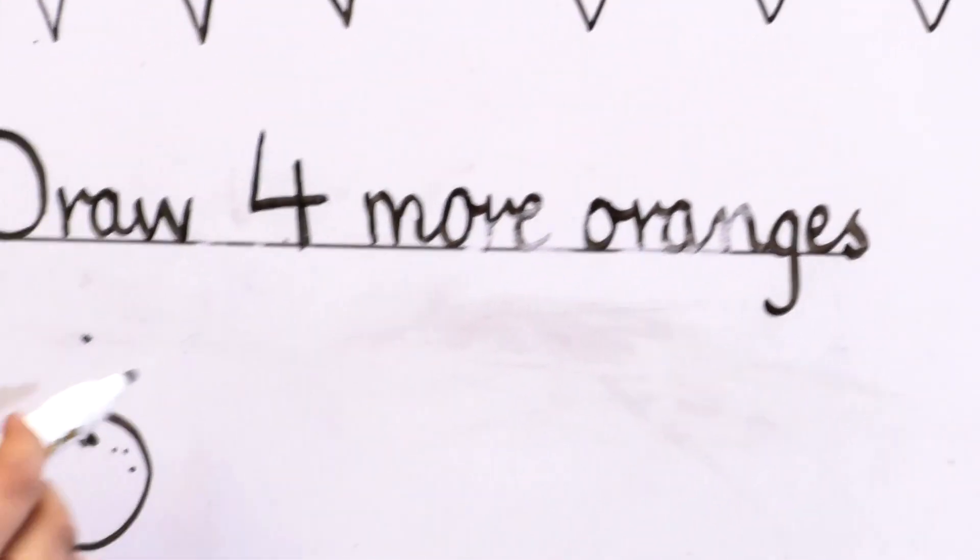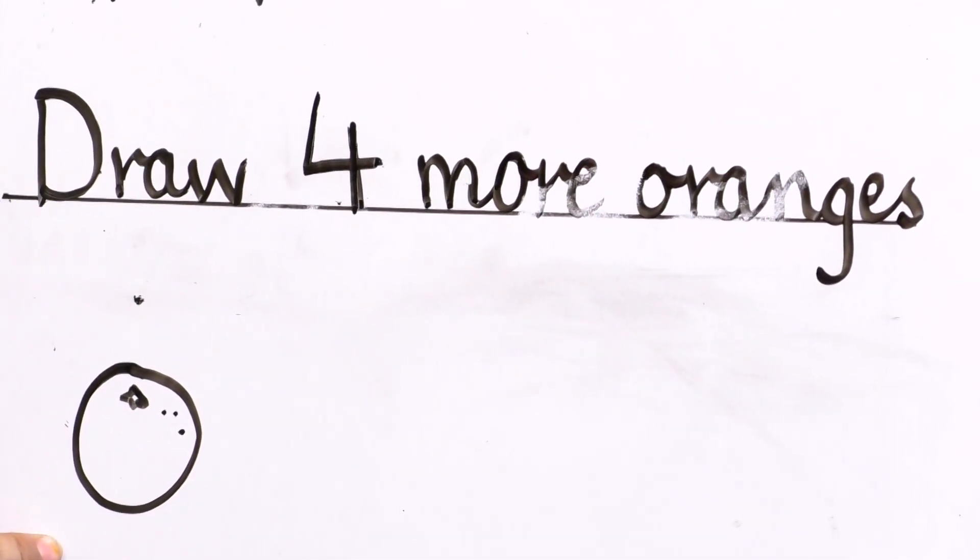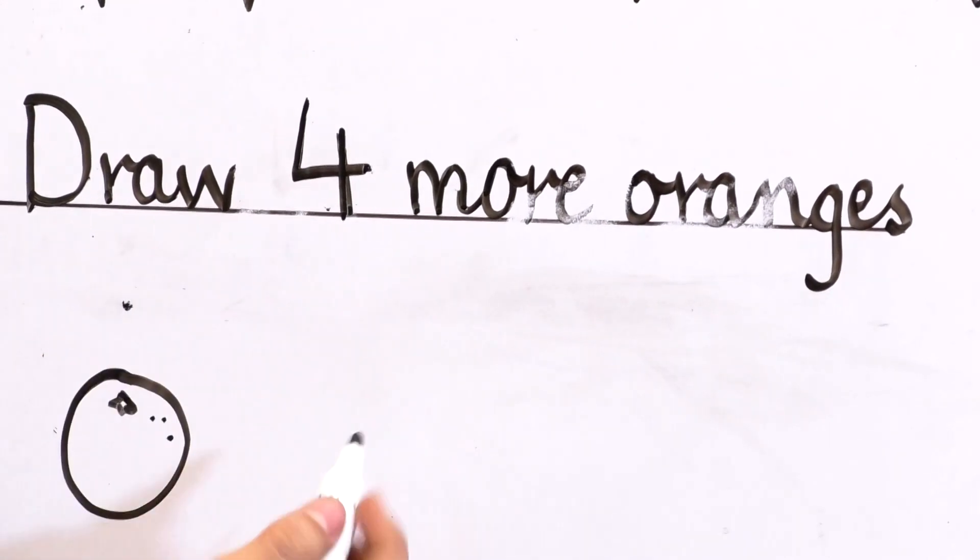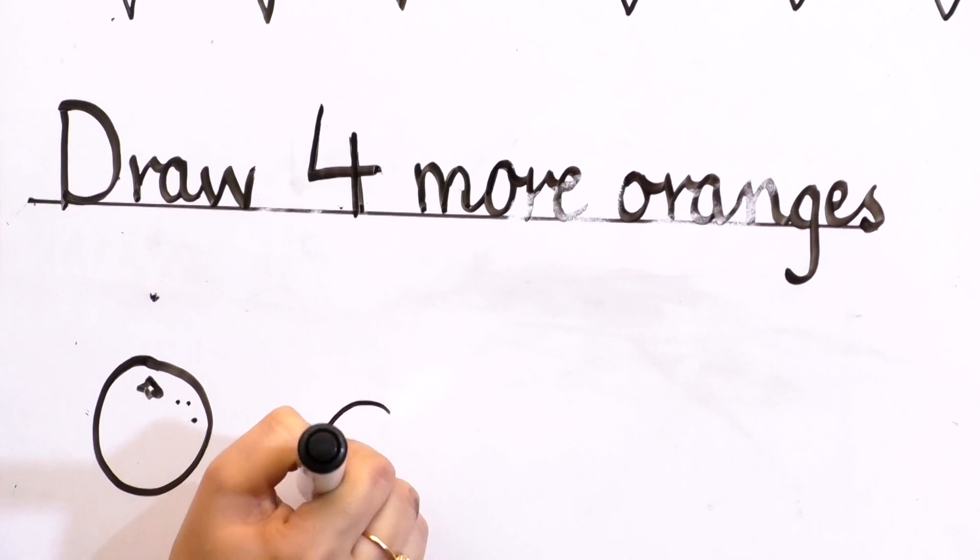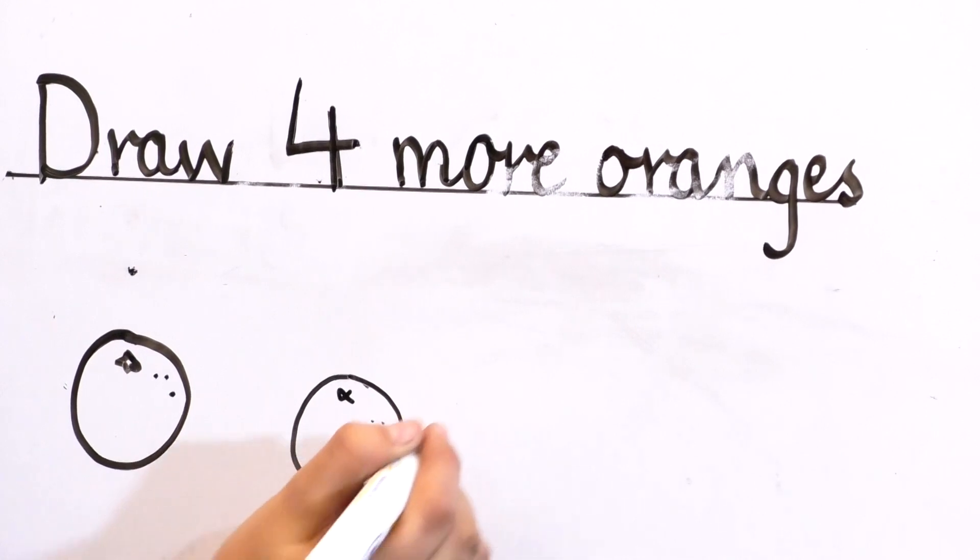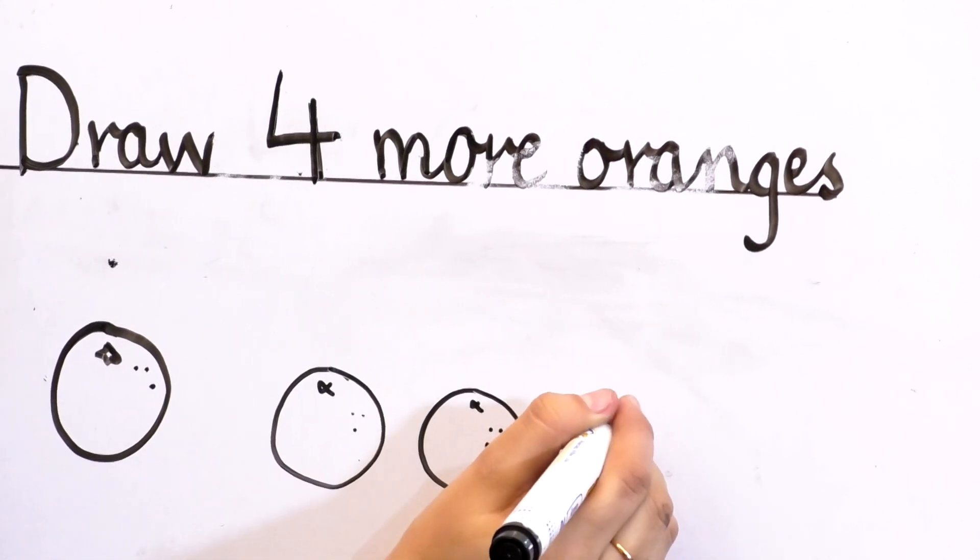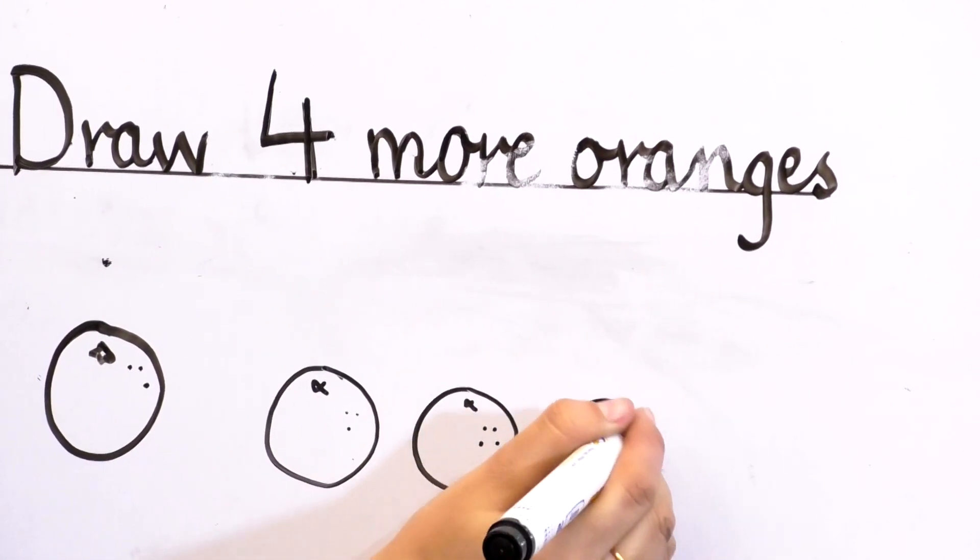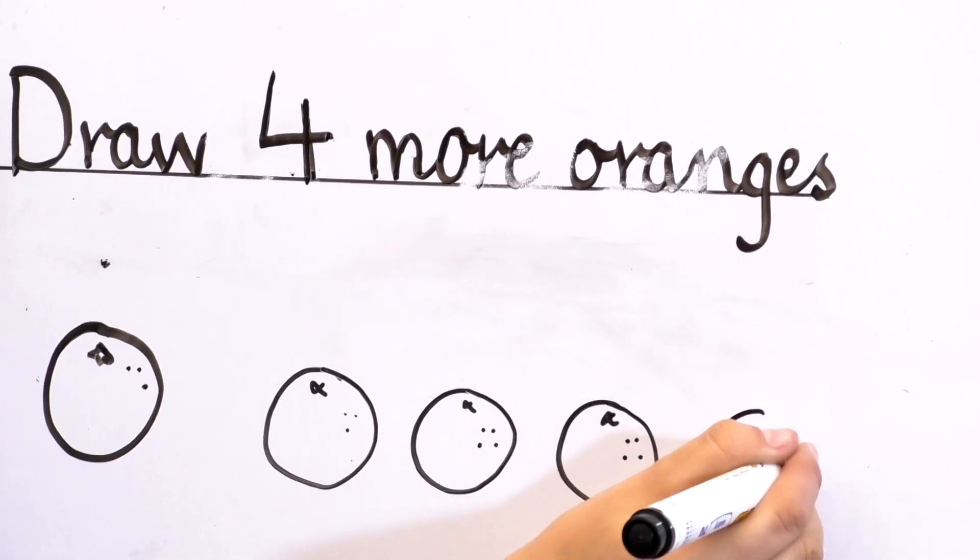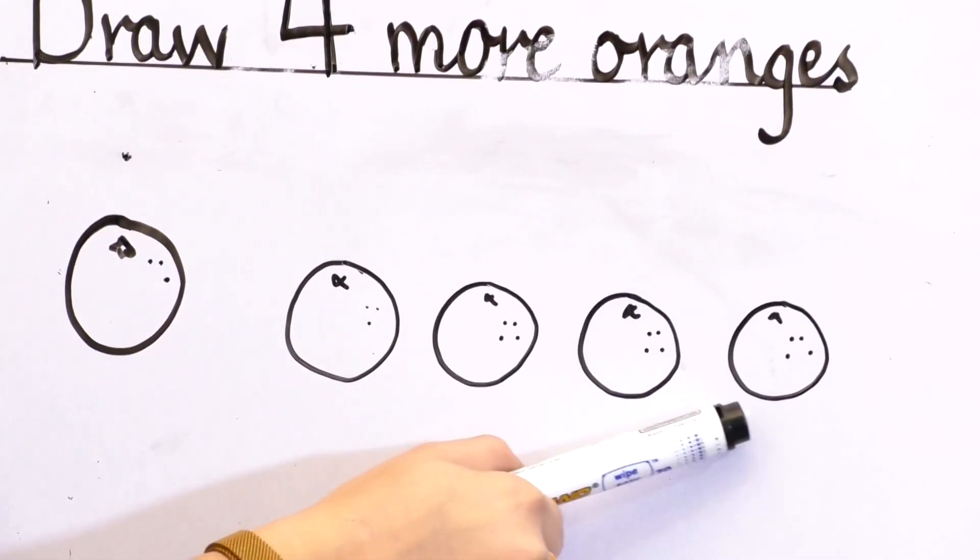Next, draw four more oranges here. We have just one orange here, so please add that. Draw four more oranges here. Let's draw. Make a circle. One orange, two oranges, three oranges, and four oranges. We draw four more oranges here.